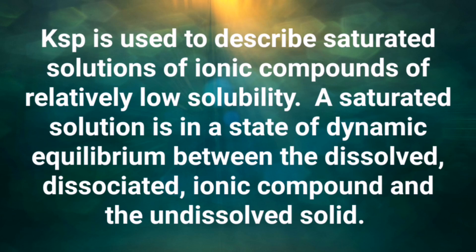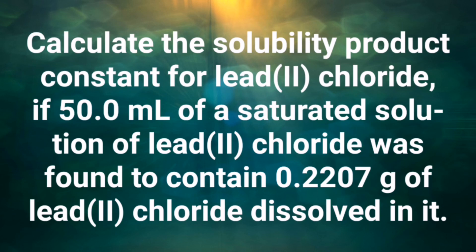It is a dynamic equilibrium between the dissolved and undissolved solid. Now I'm going to show you how it works. Let's calculate the solubility product constant for lead chloride if 50 mL of a saturated solution of lead chloride was found to contain 0.2207 grams of lead chloride dissolved in it.